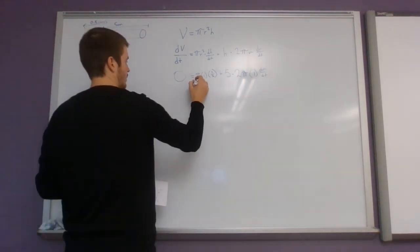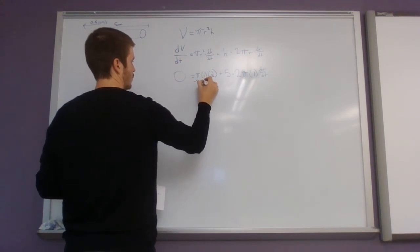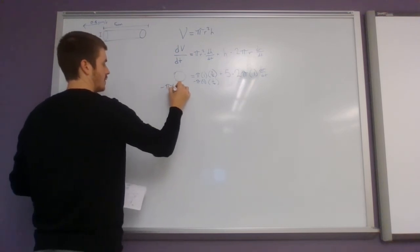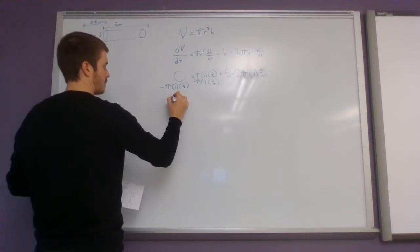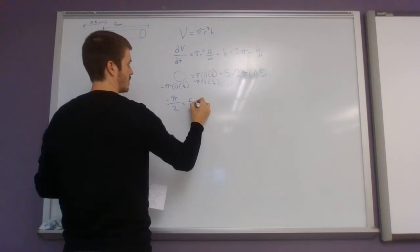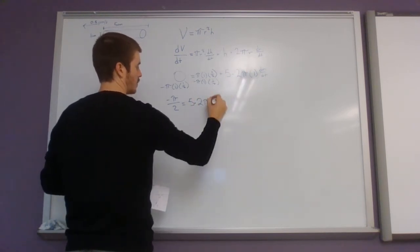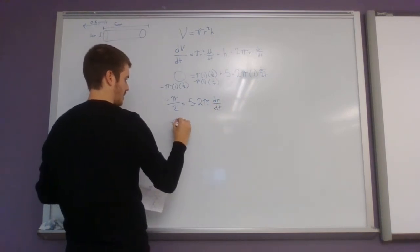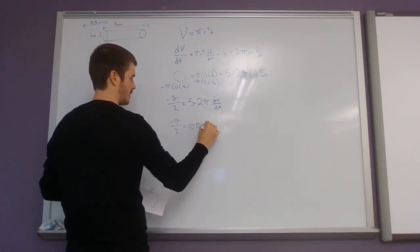Okay, so I'm just gonna go ahead and swap this term over to the opposite side. So we've got pi, negative pi over 2. Our 1 doesn't really matter there. Okay, negative pi over 2 equals 10 pi dr dt.